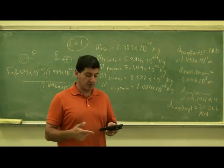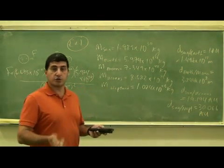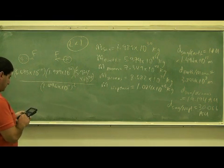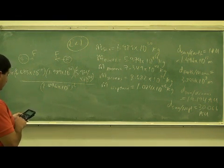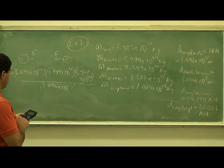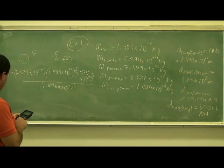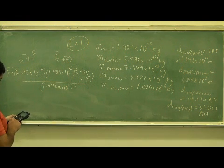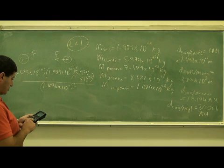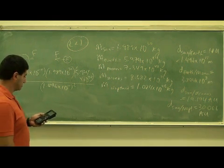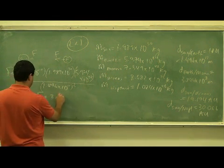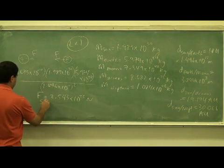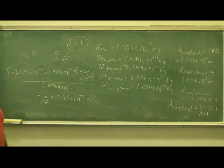You watching the video can also calculate along with me for practice. So: 6.673 times 1.989 times 5.974 times 10 to the power of 54, times 10 to the power of negative 11. That gives us 3.543 times 10 to the 22 newtons — that's the force between the Sun and the Earth. That's pretty big.